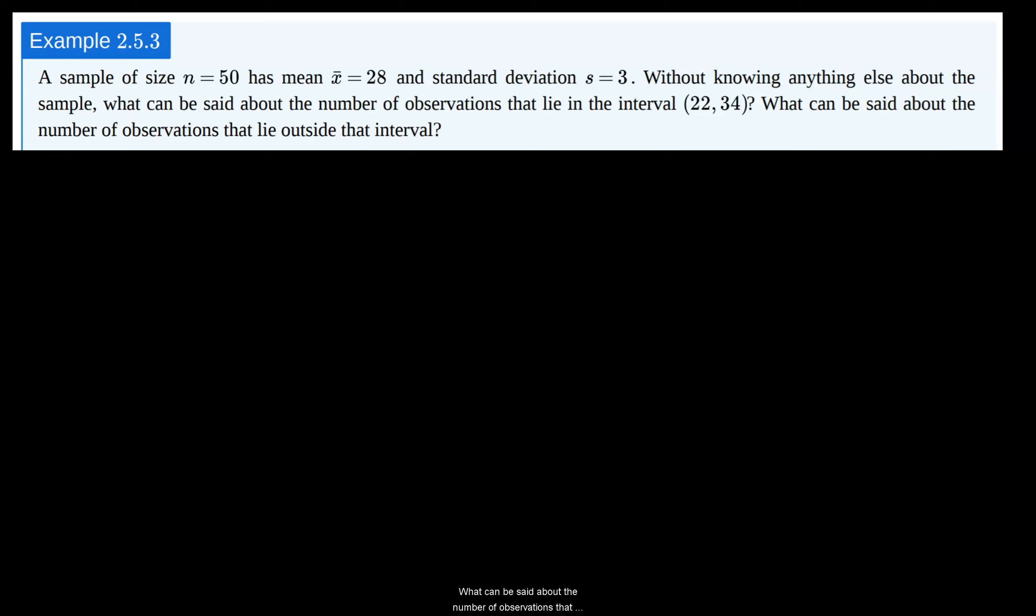What can be said about the number of observations that lie outside that interval? Chebyshev's theorem states that at least 1 minus 1 over k squared of the data lie within k standard deviations of the mean.